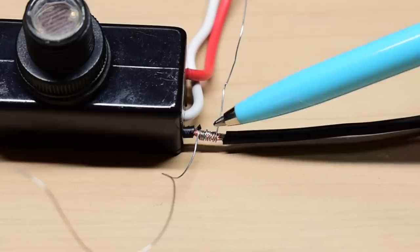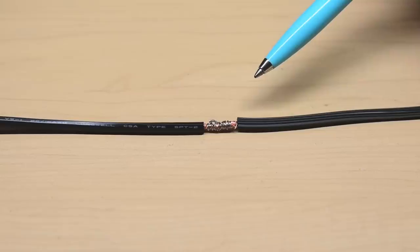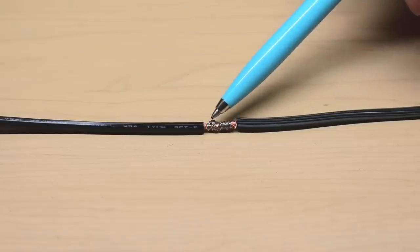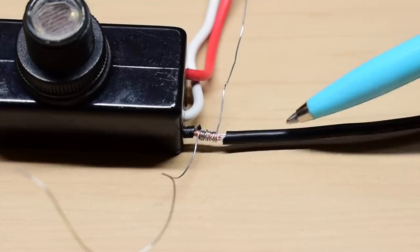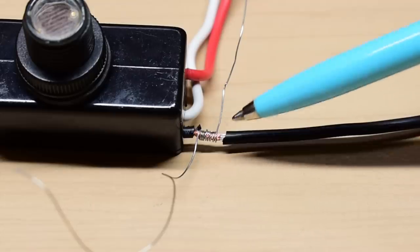As you twist, it's going to pull everything really tight in the center, and then when you're done, it's going to look like what you see right over here. Leave a little piece sticking up, and then you're going to flatten it down, and then you can slide your heat shrink with glue over the area.